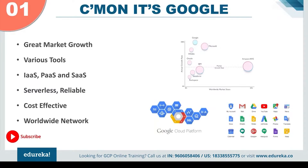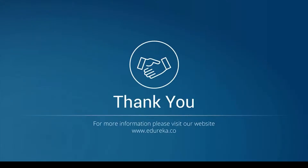Being relatively new to the cloud market, Google's annual growth rate is already off the charts — over 100%. You can relate this to the amount of services Google provides for its normal users: YouTube, Gmail, Google Drive, Maps, Sheets, Translate, Hangouts, and the list goes on. You need not worry about the quality of services provided by Google. I hope these reasons are enough for you to get started with the Google Cloud Platform, and I'm sure you'll start working on it as soon as possible.